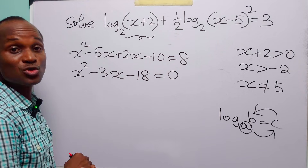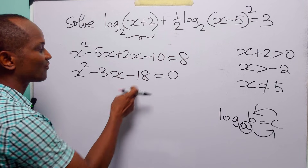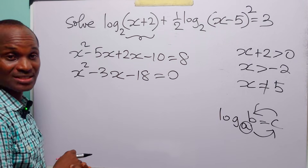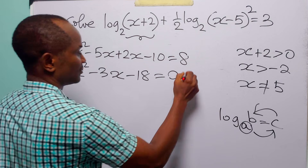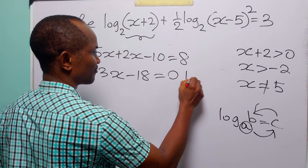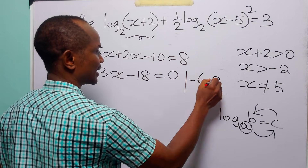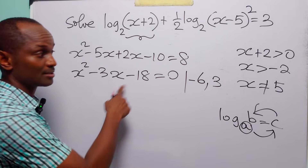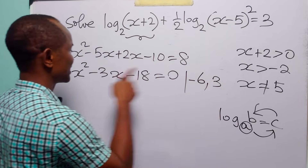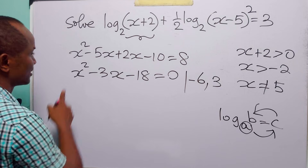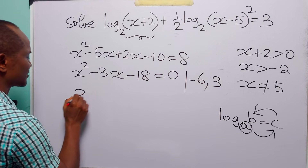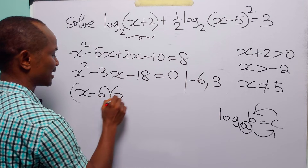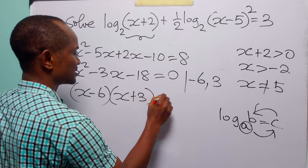Since the coefficient of x squared is 1, we find factors of minus 18 that add up to minus 3. Those are minus 6 and 3, because minus 6 times 3 is minus 18 and minus 6 plus 3 is minus 3. So factorizing gives (x minus 6) multiplied by (x plus 3) equals 0.